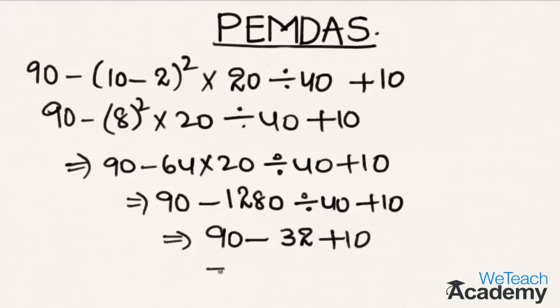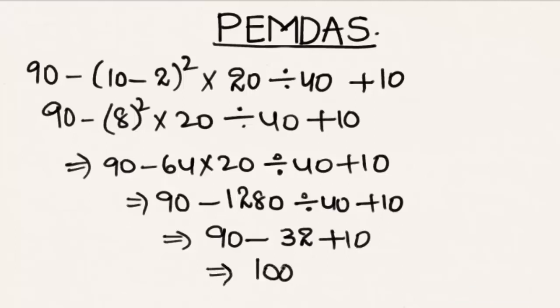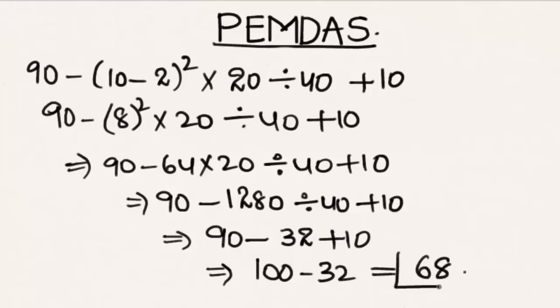The next step is to do addition. Adding 90 and 10, we get 100 minus 32. At last, by doing subtraction we get 100 minus 32, which is equal to 68 as the result.